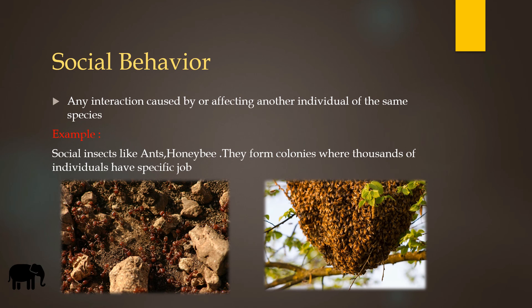Social behavior: any interaction caused by affecting other individuals of the same species is called social behavior. For example, honeybees form colonies where thousands of individuals have specific jobs. These interactions are caused by affecting another individual of the same species.